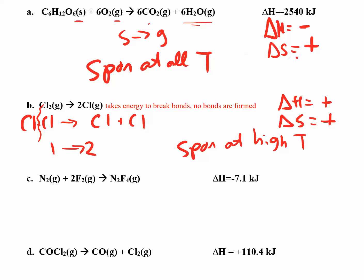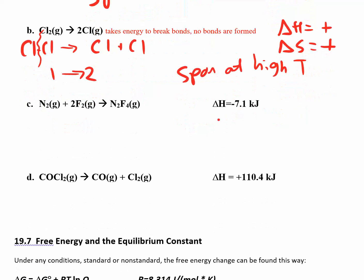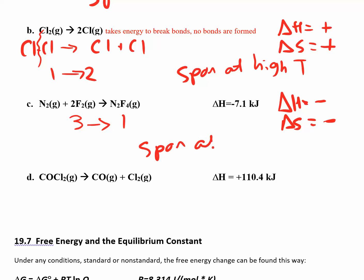You should show your work when you assign the delta S on a quiz or test — that way I know where to give partial credit. If you do that part right but then get the spontaneity wrong, you can still earn partial credit. For part C, they give you delta H is negative. Then you find the sign for delta S: we have three moles of gas going to one mole of gas, so delta S is going to be negative. Since they're both negative, this is going to be spontaneous only at low temperatures.